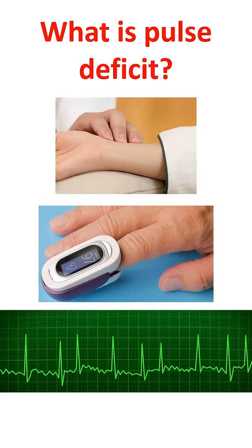Pulse deficit, or pulse apex deficit, is the difference between simultaneously counted heart rate and pulse rate. This usually occurs in atrial fibrillation. When heartbeats are very fast and irregular, as in atrial fibrillation, some of the beats are not strong enough to open the aortic valve, so that a pulse is not felt.